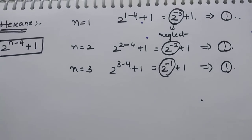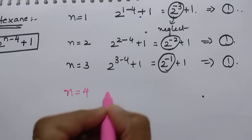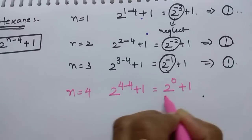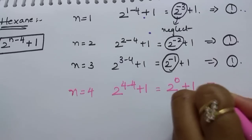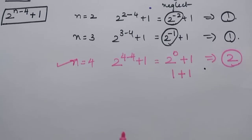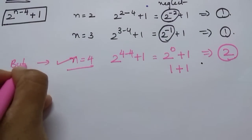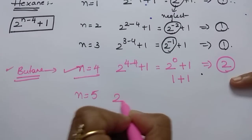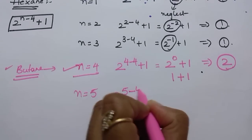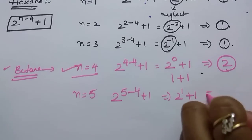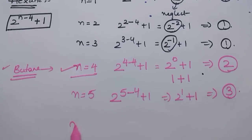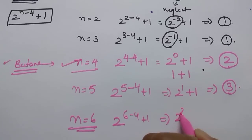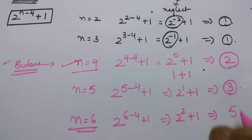For n=4 (butane): 2^(4−4)+1 = 2^0 + 1 = 1+1 = 2 isomers. Butane consists of 2 isomers. For n=5 (pentane): 2^(5−4)+1 = 2^1+1 = 3 isomers. For n=6 (hexane): 2^(6−4)+1 = 2^2+1 = 4+1 = 5 isomers. Total 5 isomers are possible for hexane.